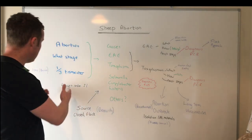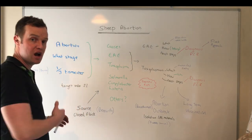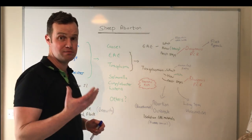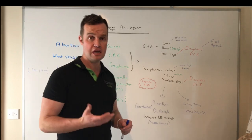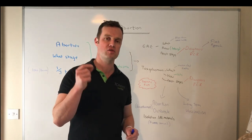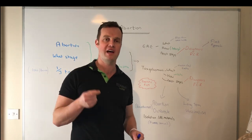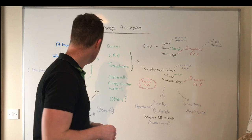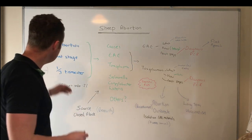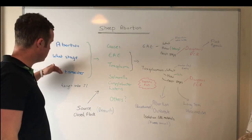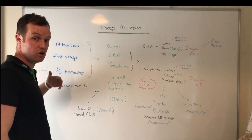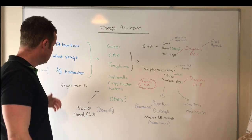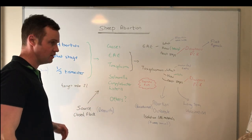We can also have abortion early on where we have an increase in barren ewes, empty ewes, and that's often associated with toxoplasma. It would be top of the list you'd be thinking about, but commonly the abortions we look at are in the last third of pregnancy - the last six weeks.